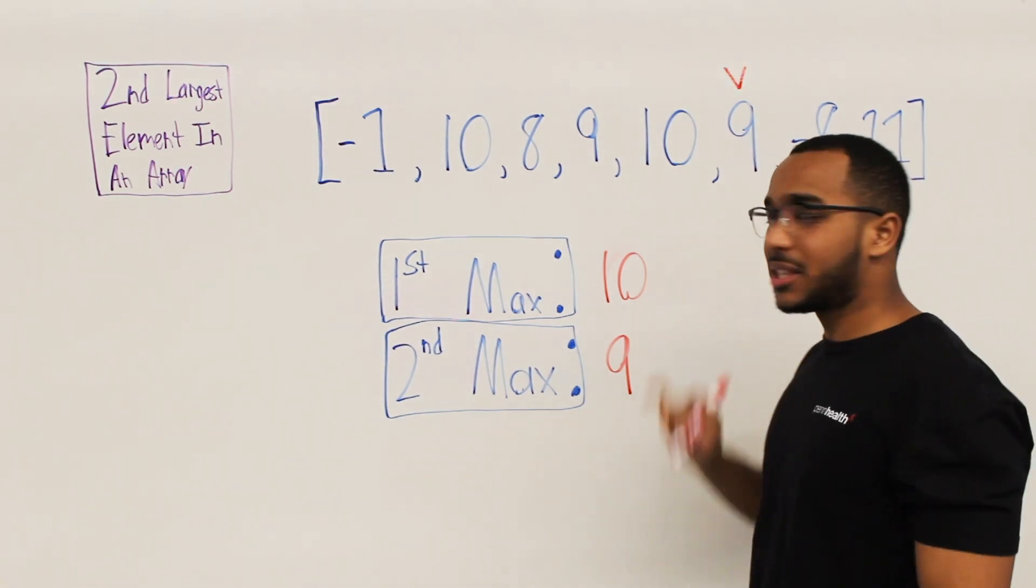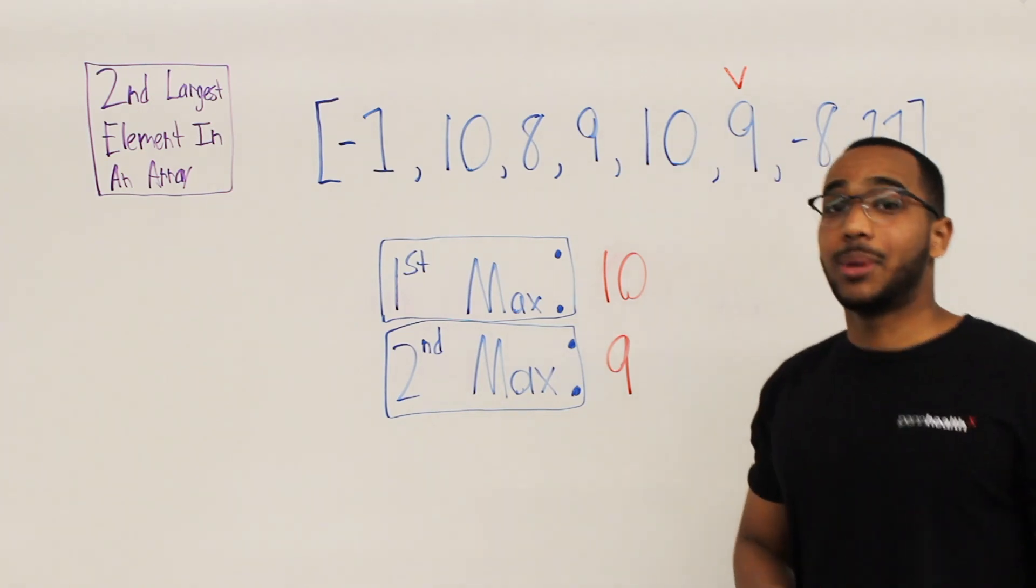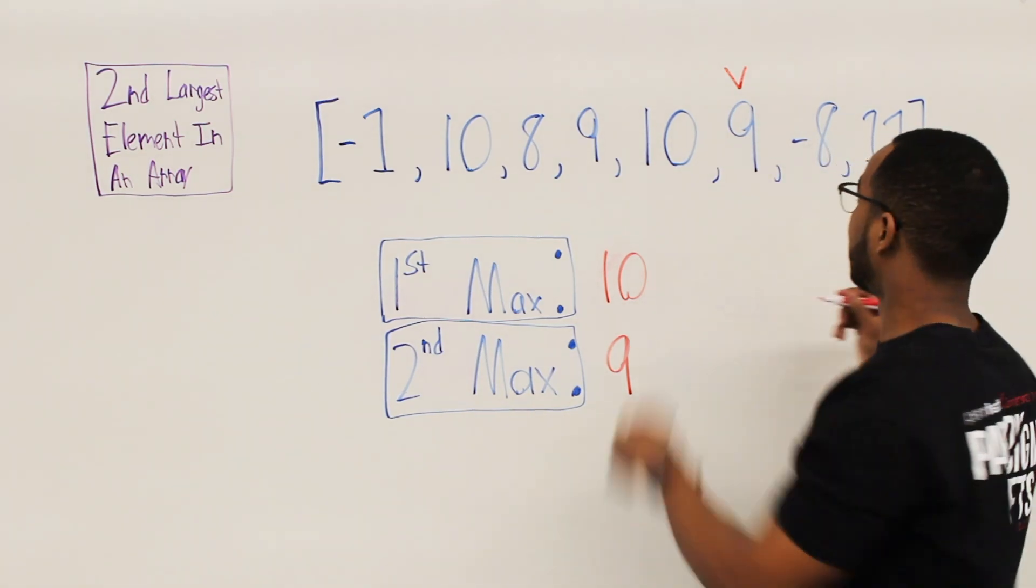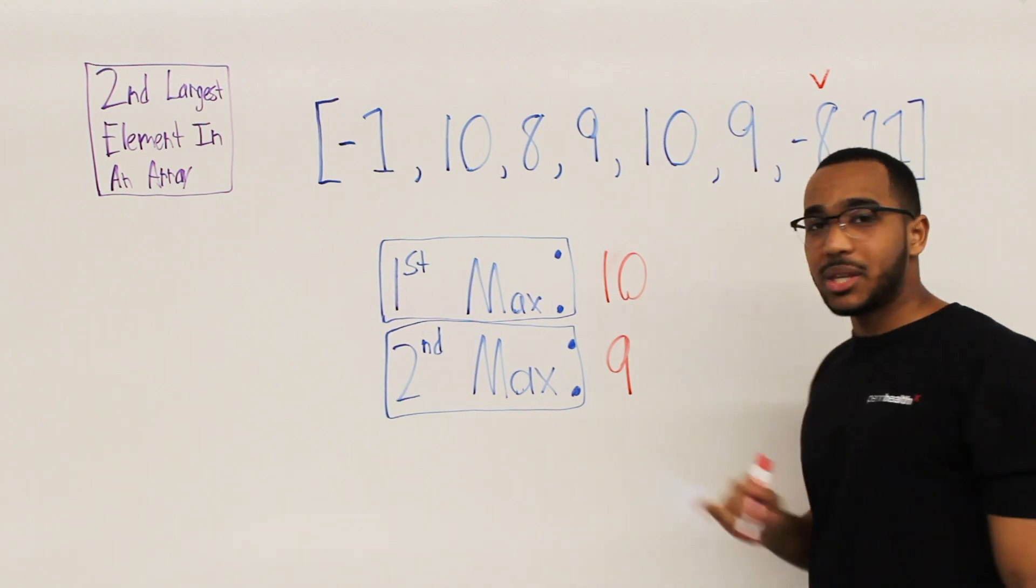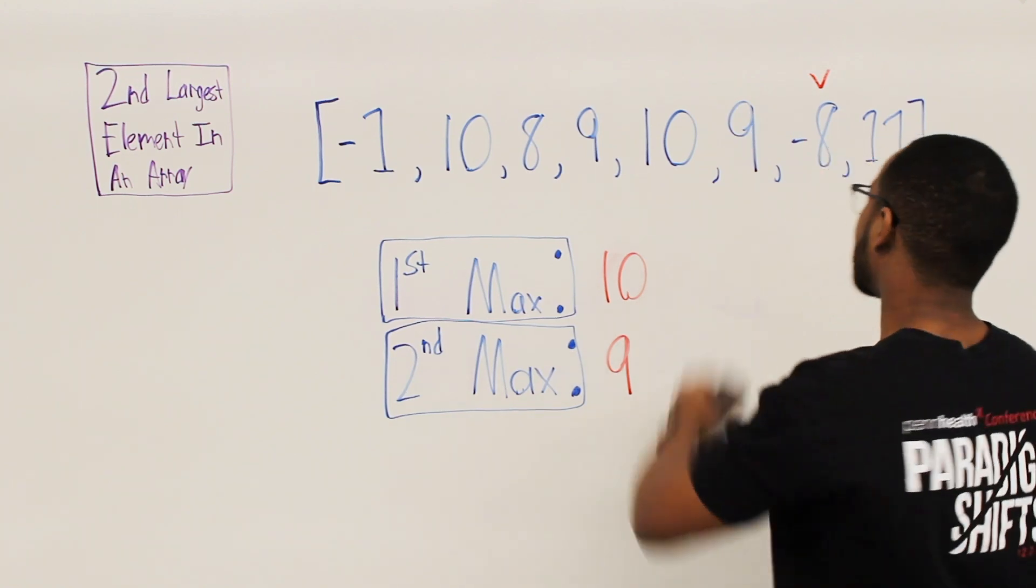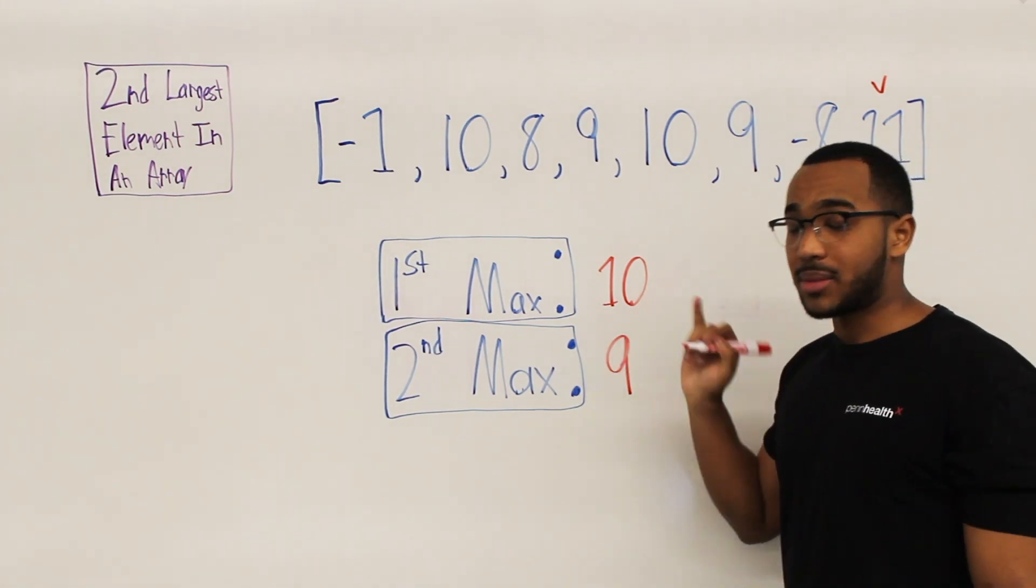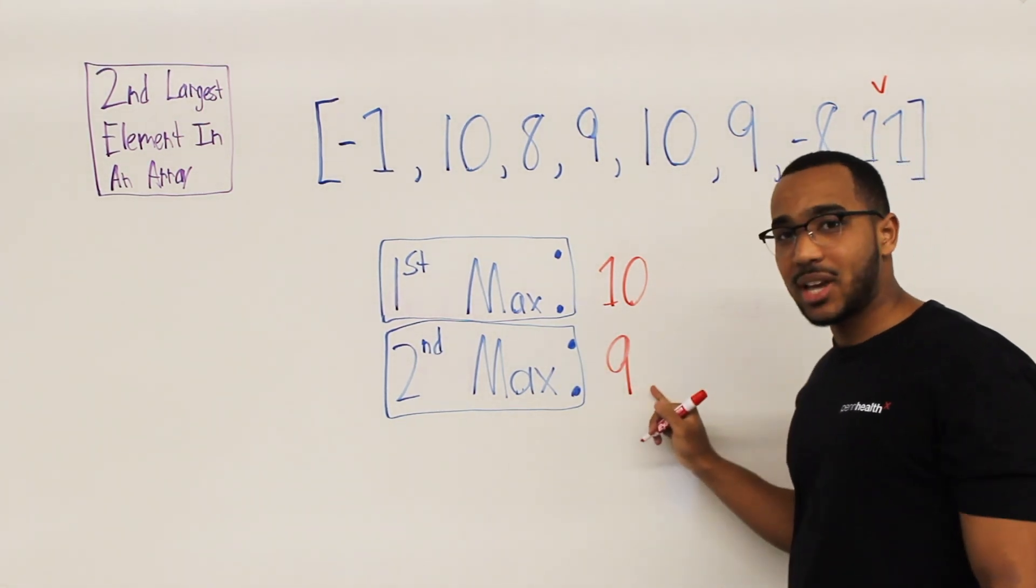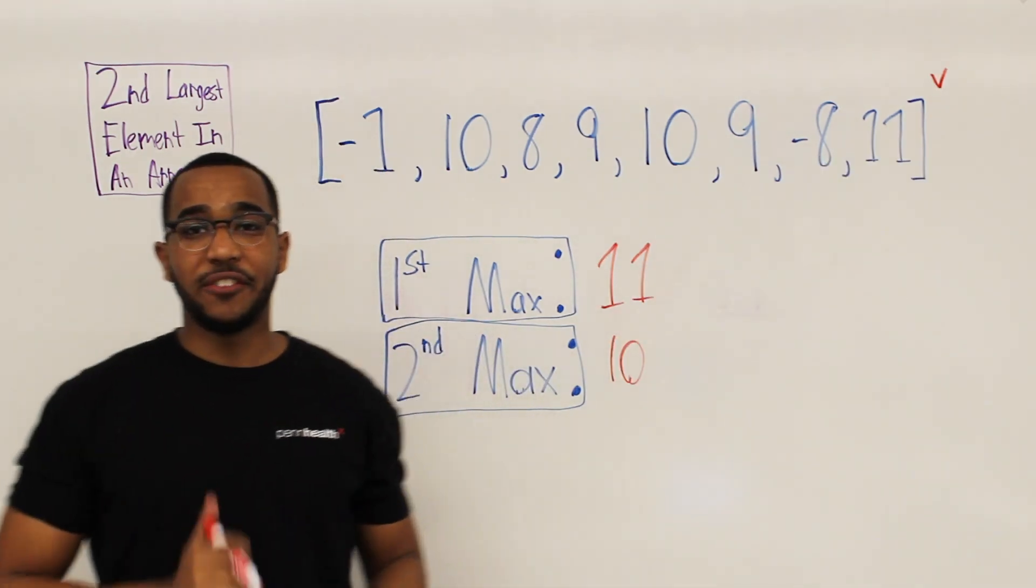So now nine, does nine beat the first maximum? No, it does not. Does nine beat the second maximum? No, it does not. So we move on. So does negative eight beat the first maximum? It does not. Does negative eight beat the second maximum? No, it does not. So now we are at 11. Does 11 beat the first maximum? Yes, it does. So 10 becomes the second maximum and 11 becomes the first maximum. And now we are finished.